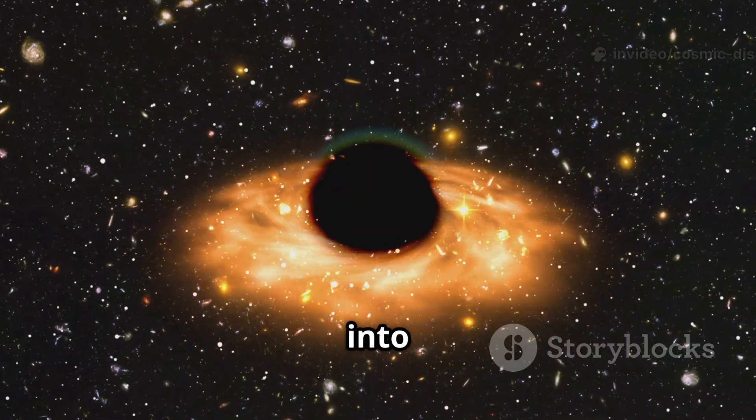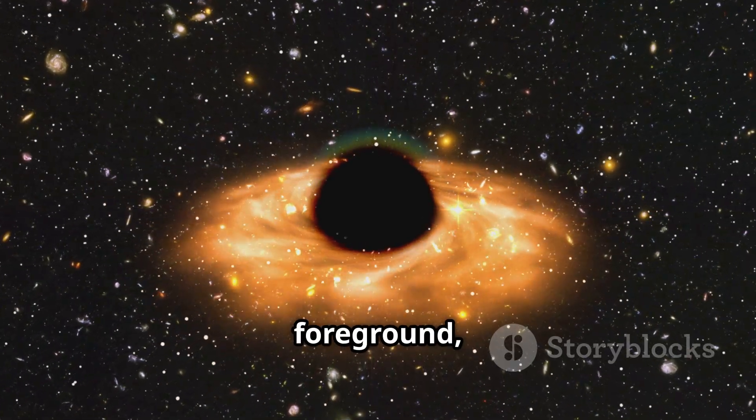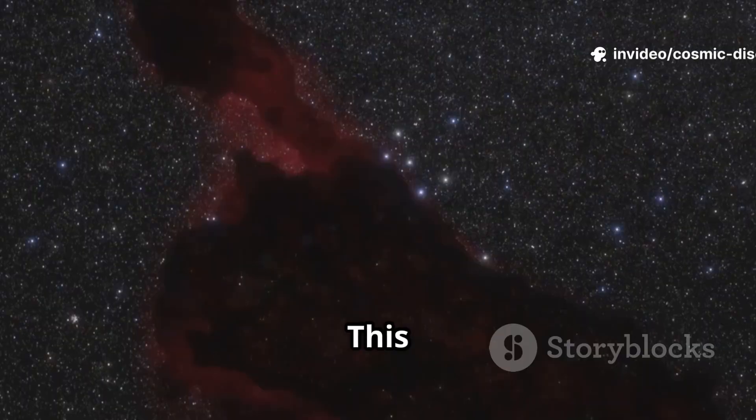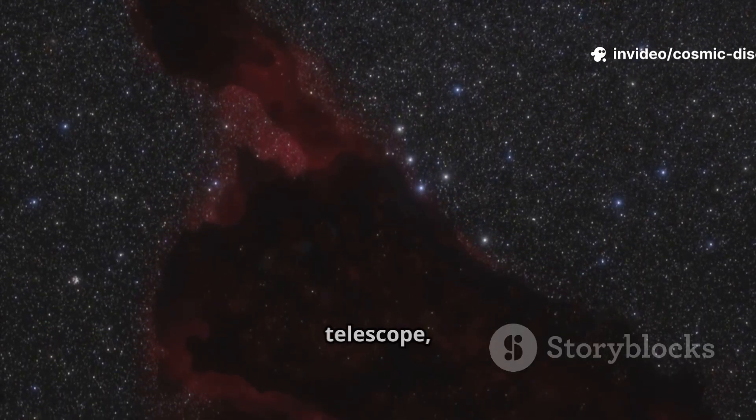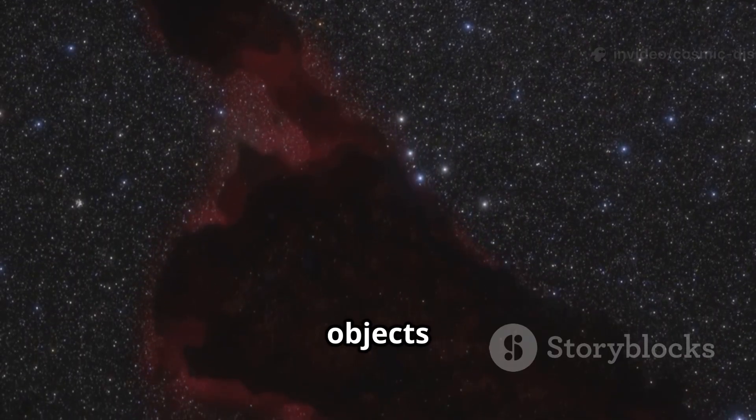Some were warped and stretched into long arcs by the gravity of a massive galaxy cluster in the foreground, a phenomenon known as gravitational lensing. This effect acts like a natural cosmic telescope, magnifying the light from even more distant objects behind it.